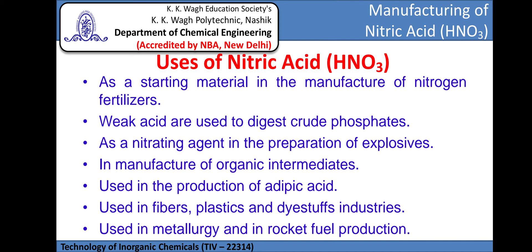The uses of nitric acid include: as a starting material in the manufacturing of nitrogen fertilizers; as a weak acid used to digest crude phosphates; as a nitrating agent in the preparation of explosives; in manufacturing of organic intermediates; in the production of adipic acid; in fibers, plastics, and dyestuffs industries; and in metallurgy and rocket fuel production.